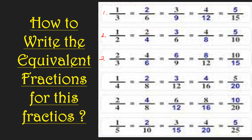Third problem: 2/3. Using the same procedure — multiply by 2/2, then 3/3, then 4/4, then 5/5. Fourth problem: 1/4. The equivalent fractions are 2/8, 3/12, 4/16, and 5/20. Fifth problem: 2/4. Multiplying by 2/2 gives 4/8. Multiplying by 3 gives 6/12. Multiplying by 4 gives 8/16. Multiplying by 5 gives 10/20.